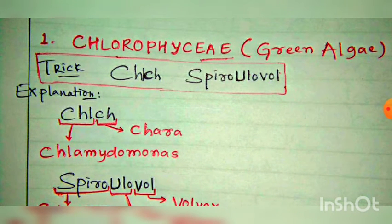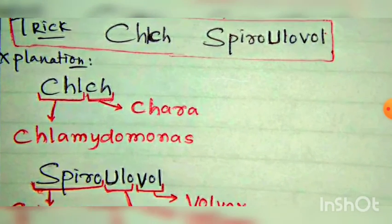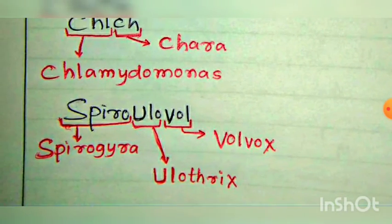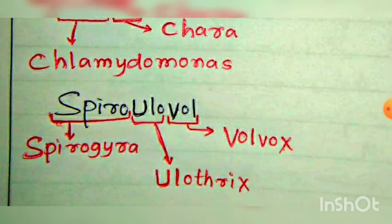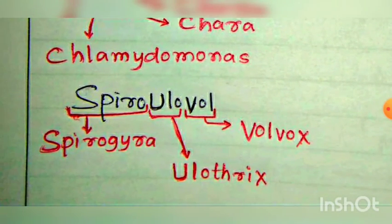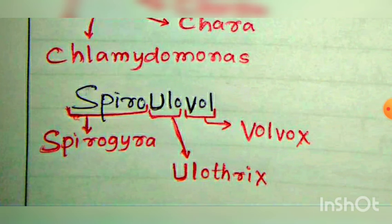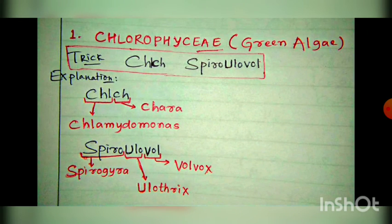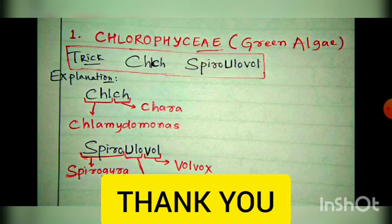The second segment has three examples: 'spiro' is Spirogyra, 'ulo' is Ulothrix, and 'vol' is Volvox. In the next video we will learn the class Phaeophyceae. Thank you.